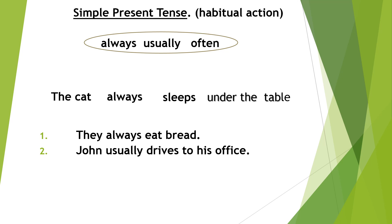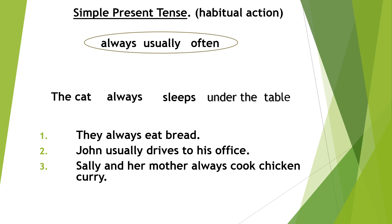One more sentence: 'Sally and her mother often cook chicken curry.' Write the subject first — Sally and her mother. Then the verb: cook or cooks? Don't forget to write 'often' between subject and verb. Write the whole sentence: Sally and her mother often cook chicken curry.